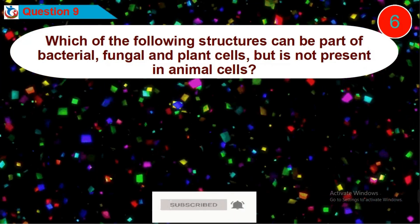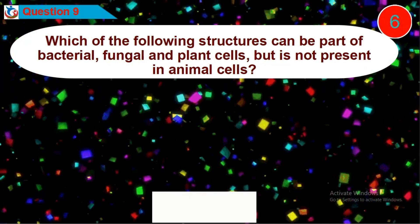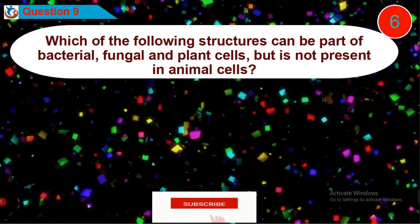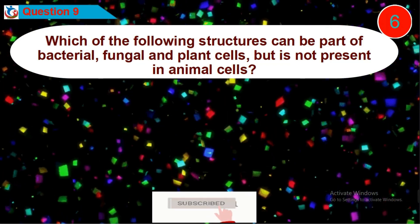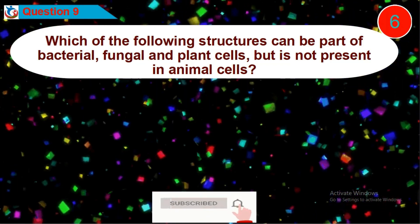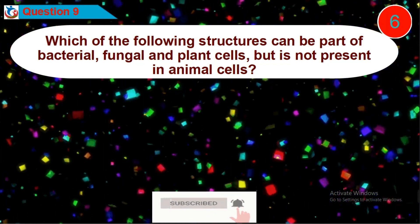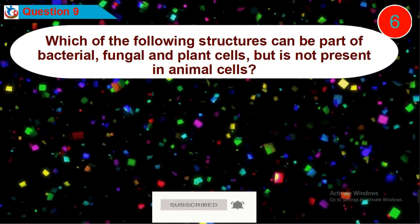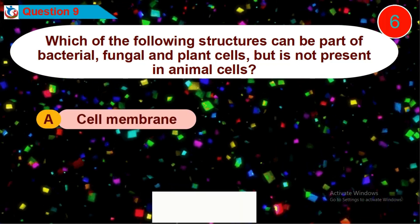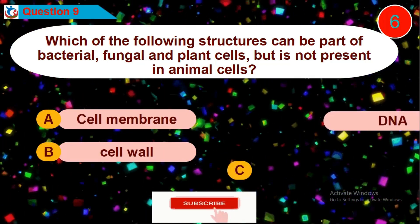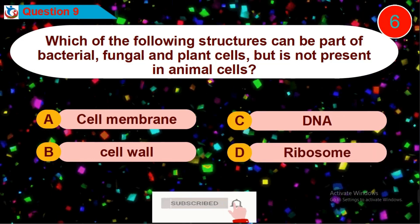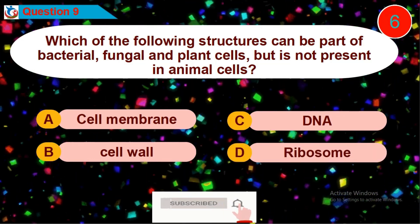Question 9: Which of the following structures can be part of bacterial, fungal, and plant cells but is not present in animal cells? Is it option A, B, C, or D?